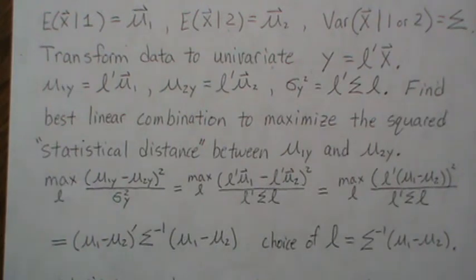And the choice of L that achieves this maximum is this right here. So this is the optimal linear combination to find, to discriminate between the two populations.